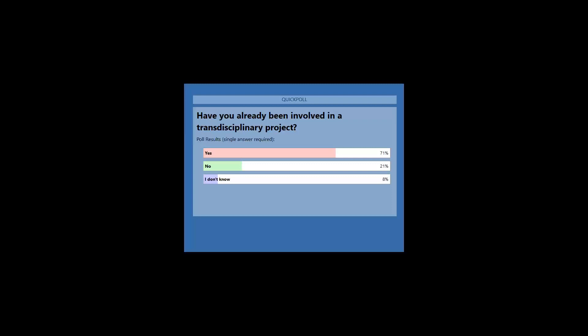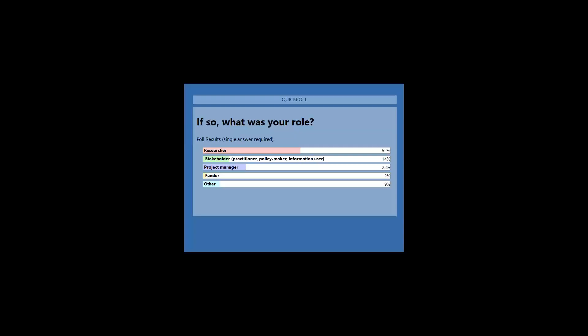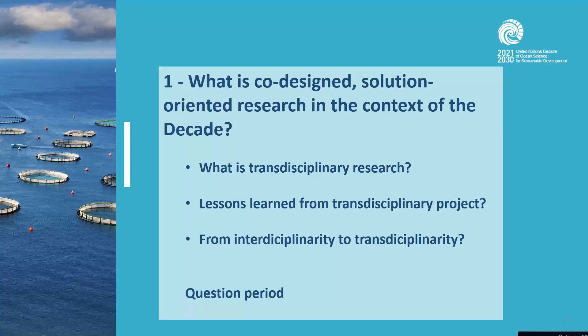Poll results show that most participants are in the researcher role, followed by project managers, some stakeholders, and a few funders. Among the nearly 900 people who signed up, all those roles are represented. The host moves into the next segment on what the key elements and parameters of doing transdisciplinary research are, what has been learned from different projects, and how to move from multidisciplinarity and interdisciplinarity to true transdisciplinarity.